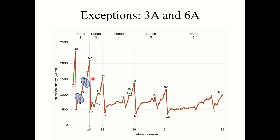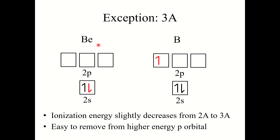There are two brief exceptions: columns 3A and 6A. Going from column 2A to 3A — beryllium to boron — we'd expect ionization energy to slightly increase since boron is smaller than beryllium, but it actually slightly decreases. This is because it is easier to remove the lone electron in the higher-energy p orbital than to remove an electron from the lower-energy 2s orbital that is closer to the nucleus. So ionization energy decreases from Be to B.